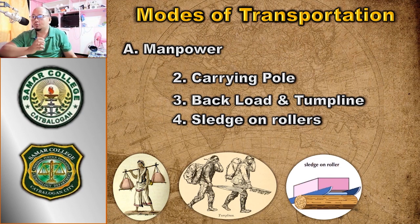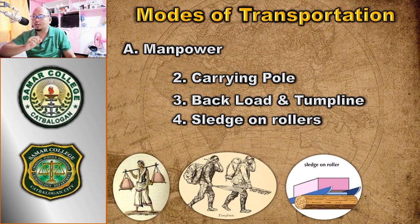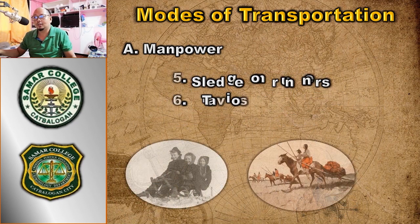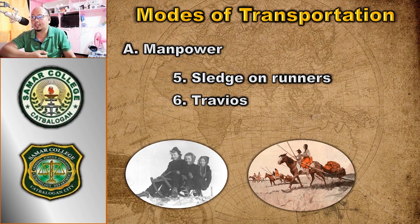Under manpower, we also have the carrying pole, backload and tumpline. With the backload and tumpline, goods are carried on the back — pots are carried on a wooden framework supported by a tumpline across the forehead, and the load is held on the back by a strap passing over the chest. Another method is sledge on runners, and the last is trivius, where goods are dragged using human or animal power.